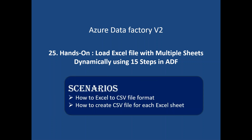The scenarios we are going to cover: first, how to convert Excel data into CSV file format. Excel and CSV have a key difference — Excel can have multiple sheets, that's why Excel is called a workbook, whereas a CSV file has only a single sheet. In my example, Excel has two sheets: an Employee sheet and a Department sheet. We will convert these two sheets into two different CSV files.